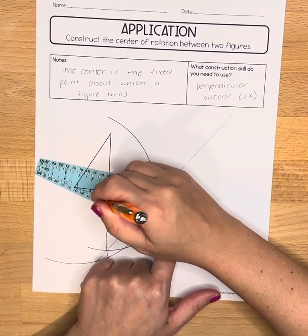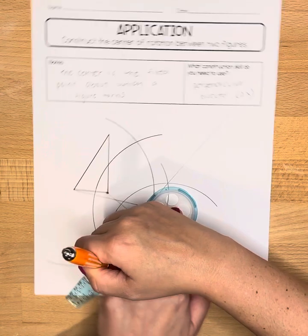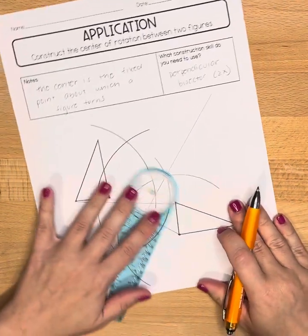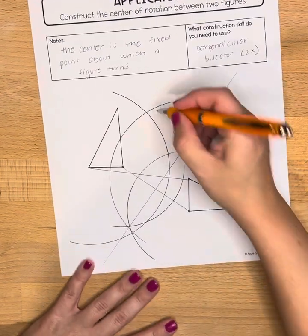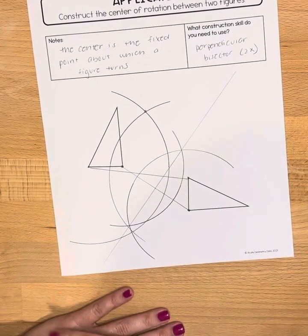You can always go back to the video for perpendicular bisectors if you need a refresher on that. And now I'm looking for where did those two arcs intersect. So I can see one pretty clearly up here.